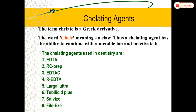Coming to chelating agents. A chelating agent is defined as a chemical which combines with a metal to form a chelate. Chelating agents were introduced in dentistry in 1957 to aid in the preparation of narrow and tortuous canals, to soften the canal dentin, and to increase its dentinal permeability by removing the smear layer. The word chelate means 'to claw,' because a chelating agent can combine with and inactivate metallic ions. The chelating agents used in dentistry are: EDTA, RC-Prep, EDTAC, Largal Ultra, Cubicide Plus, Salvizol, and File-Eze.